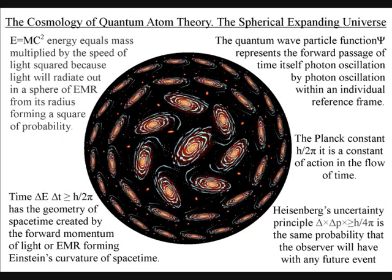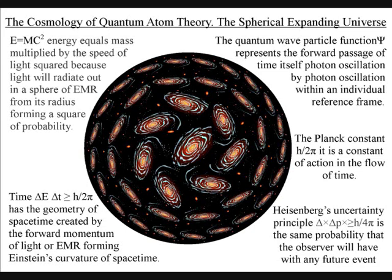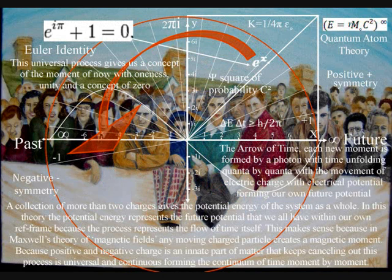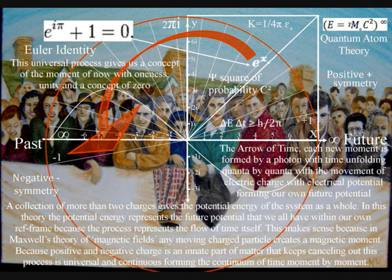As the electromagnetic force distorts the geometry of spacetime, this fits in with the reality of our everyday life. Because a collection of more than two charges gives the potential energy of the system as a whole, in this theory potential energy represents the future potential that we all have within our own reference frame, because the process represents the flow of time itself.